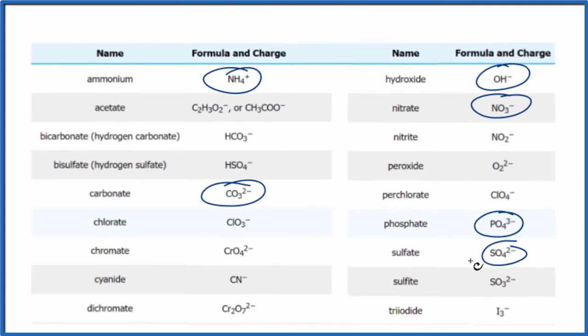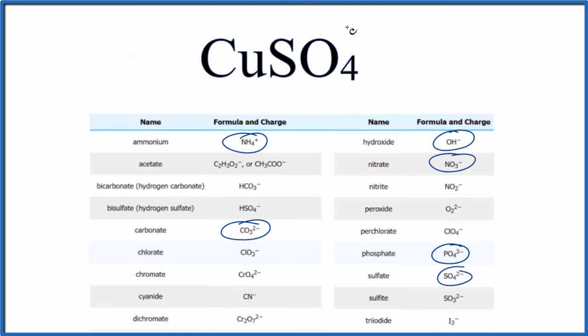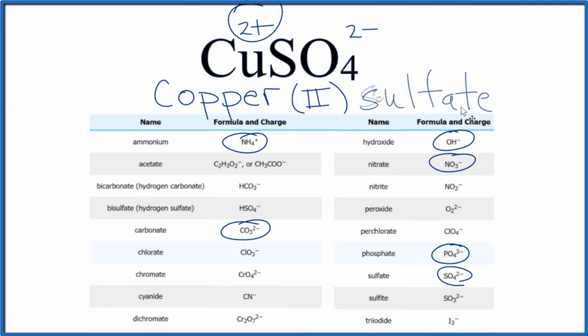So SO4, two minus. That's the sulfate ion. So the whole thing is two minus. That means the copper has to be two plus. So we're going to call this copper two. And then we have our sulfate. And that's the name for CuSO4.